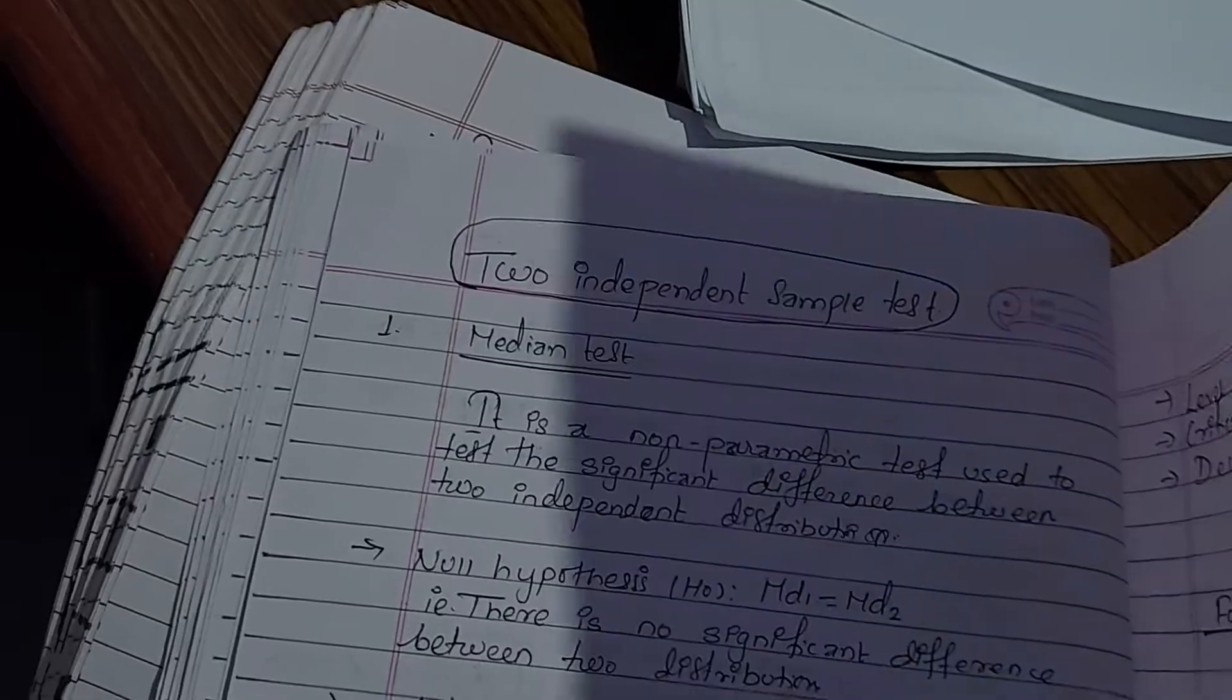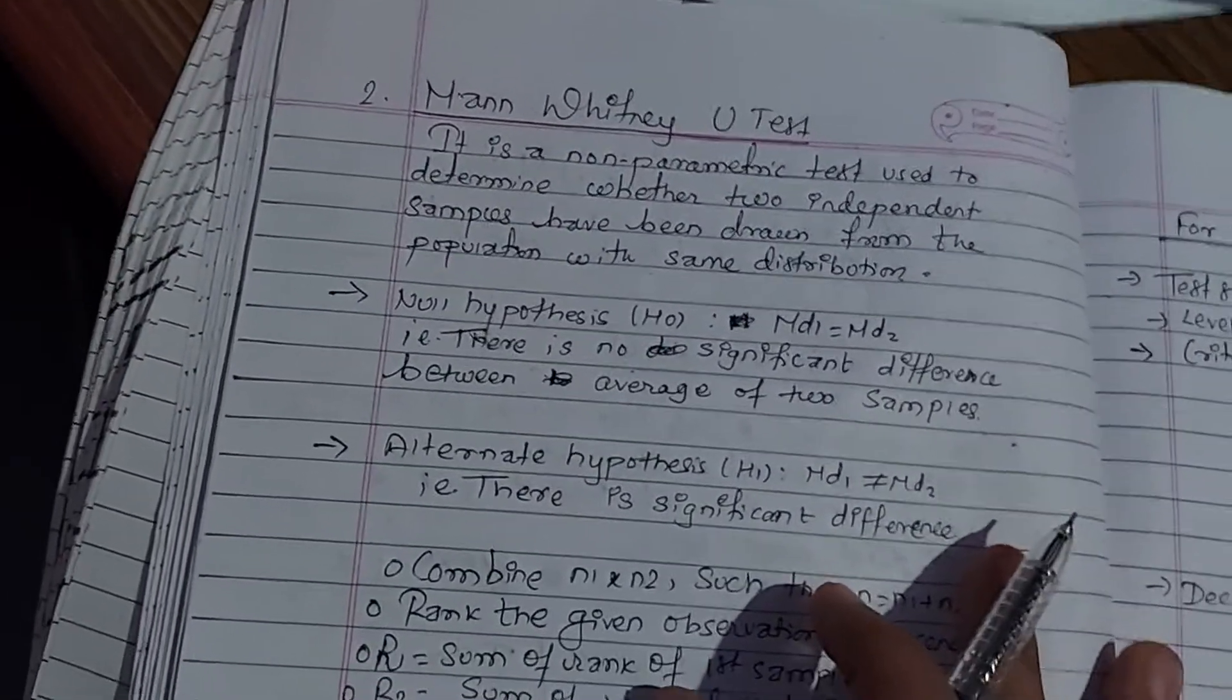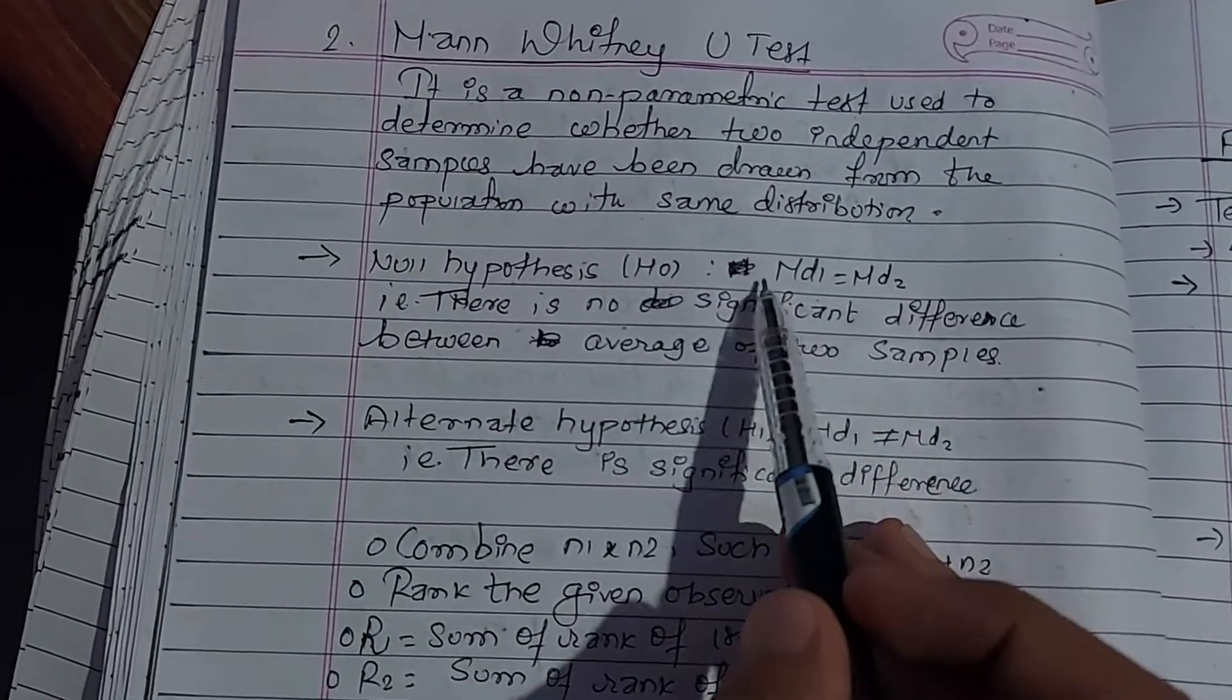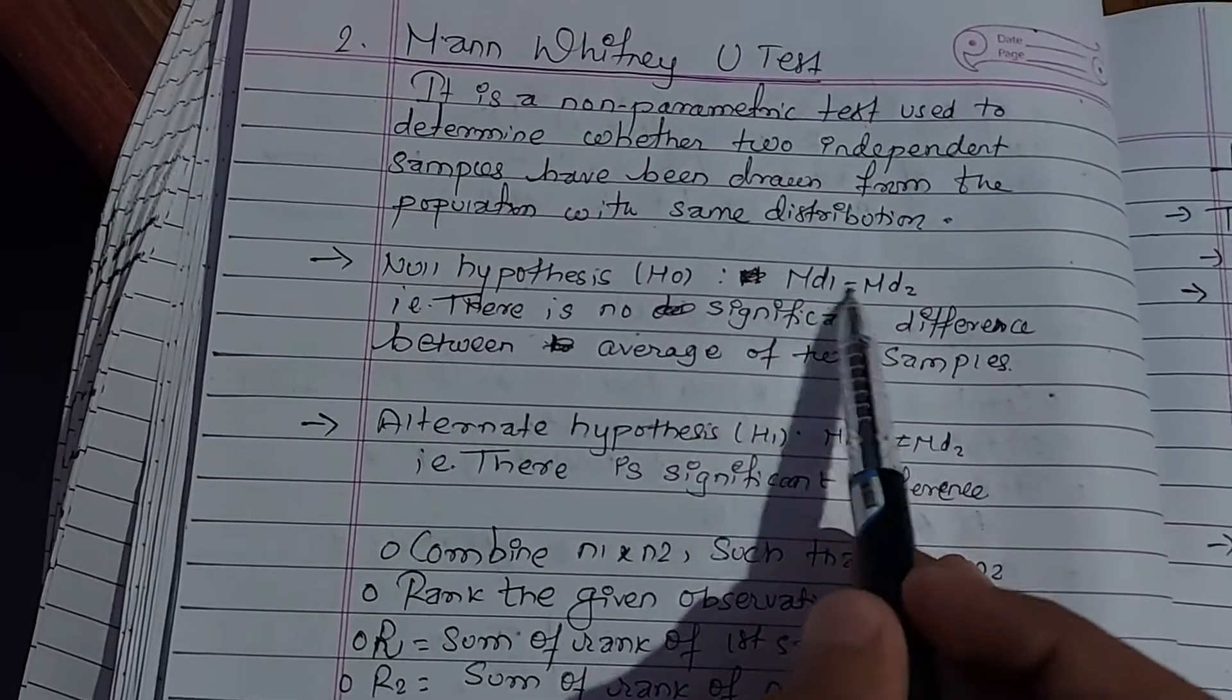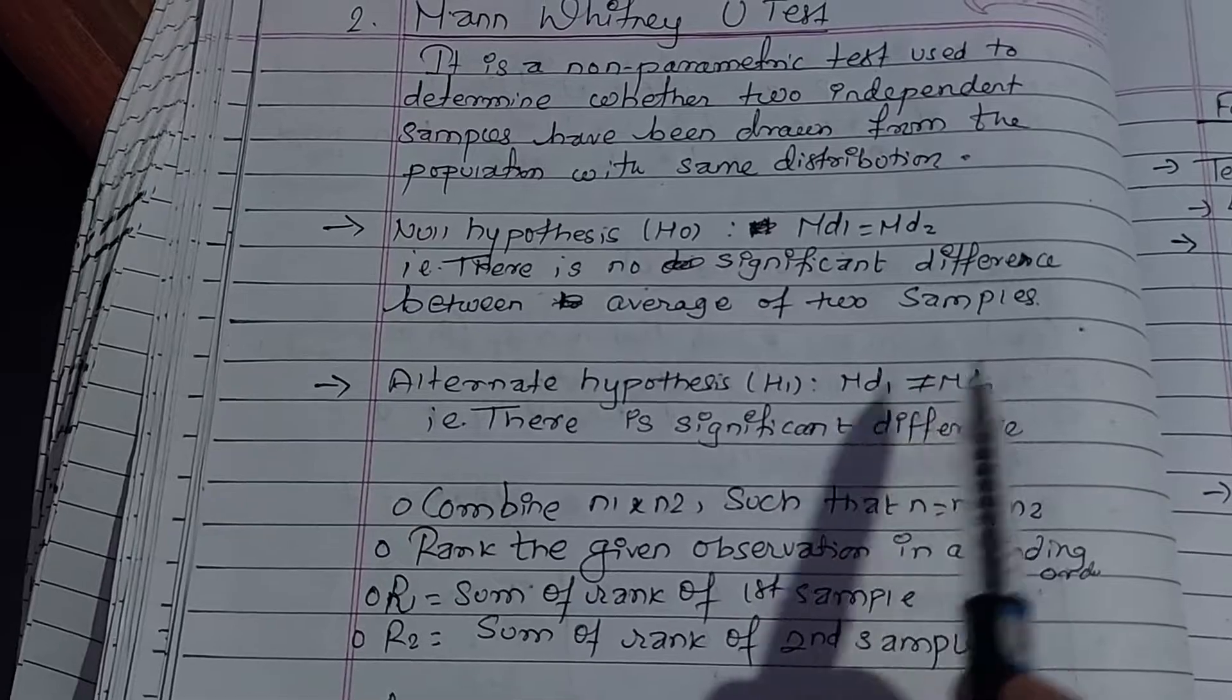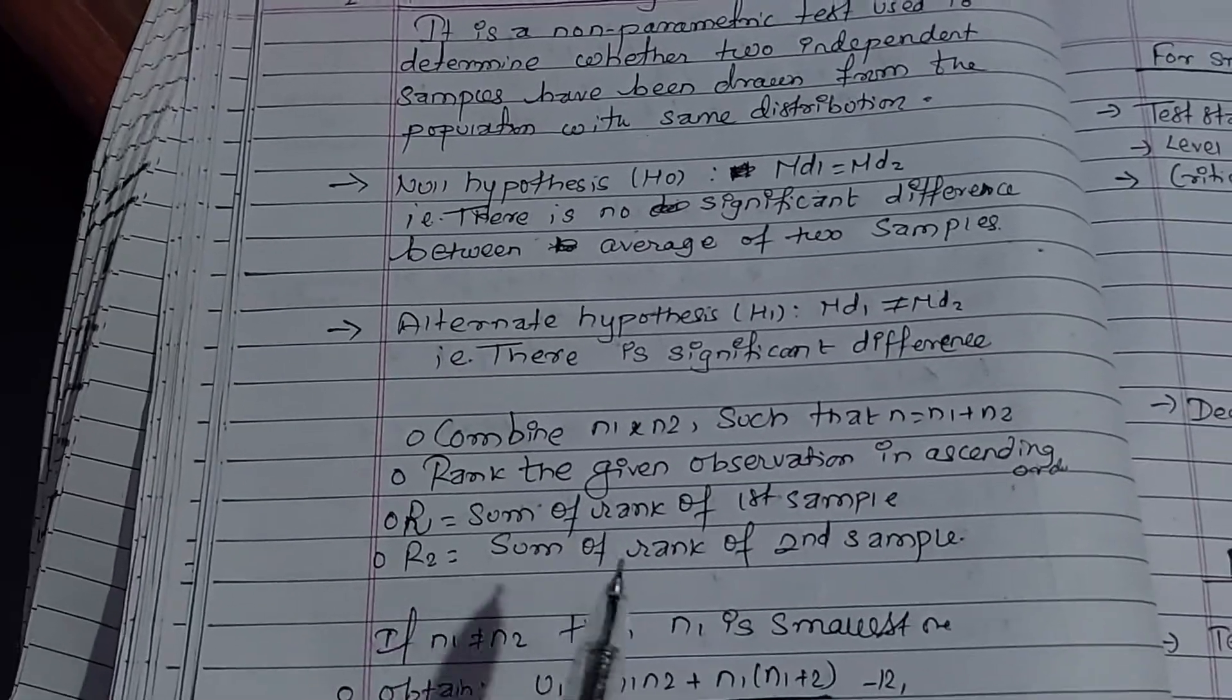Let me explain the hypothesis formulation. The null hypothesis H0 states there is no significant difference between the average of two samples, while the alternate hypothesis H1 states there is a significant difference between them.